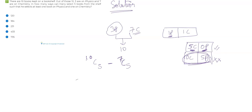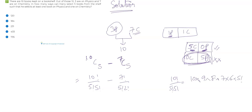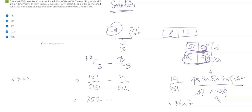If I simplify this, I get 10C5 minus 7C5, which is 10 factorial by 5 factorial times 5 factorial minus 7 factorial by 5 factorial times 2 factorial. Simplifying 10C5: writing it as 10 × 9 × 8 × 7 × 6 divided by 5 factorial (which is 120) gives 252. And 7C5 equals 7 × 6 divided by 2, which is 21. So 252 minus 21 gives 231, which is the same answer as before.